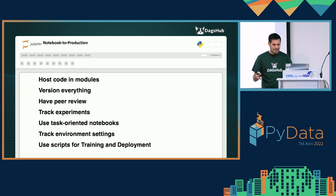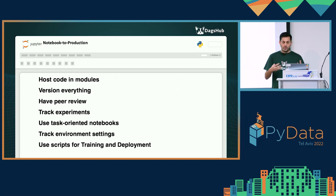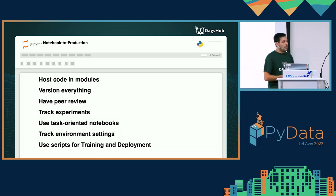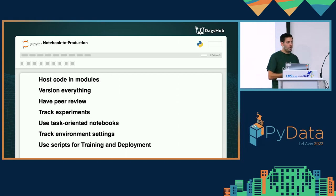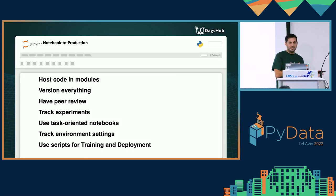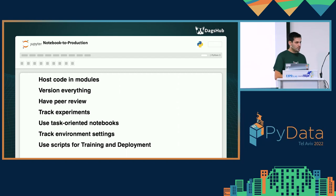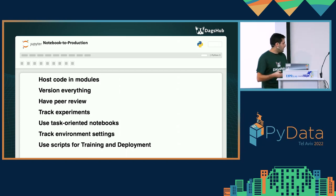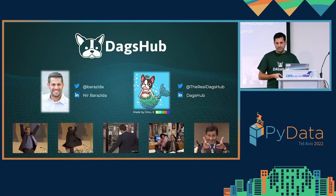To recap: host code in Python modules and import back to notebooks; version everything — code, notebooks, data, models; have peer reviews as early as possible in the pipeline; track experiments; use task-oriented notebooks; track environment settings and OS-level dependencies; and use scripts for training and deployment. These seven best practices will make your Jupyter notebook workflow more reproducible, scalable, and help you move much faster to production.